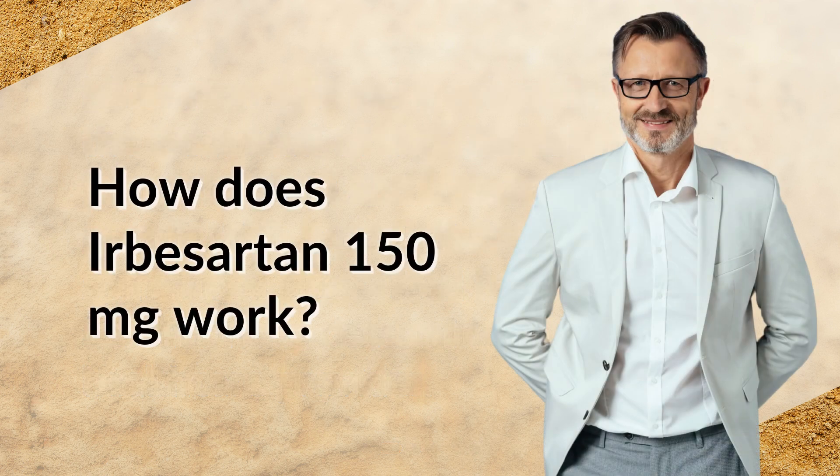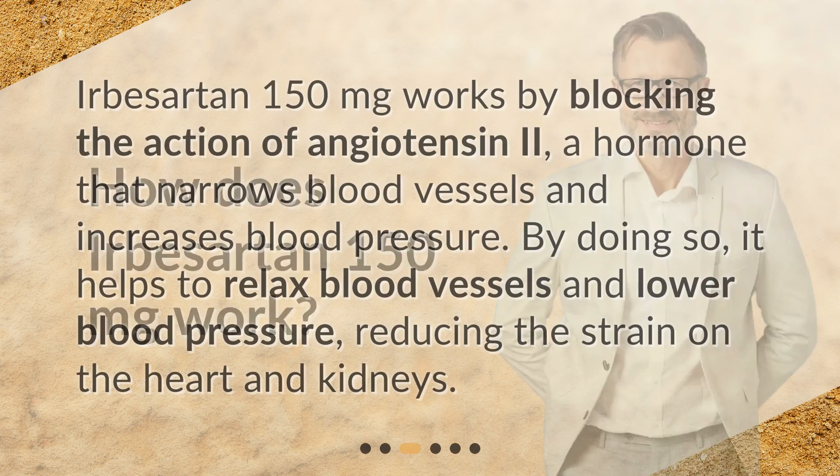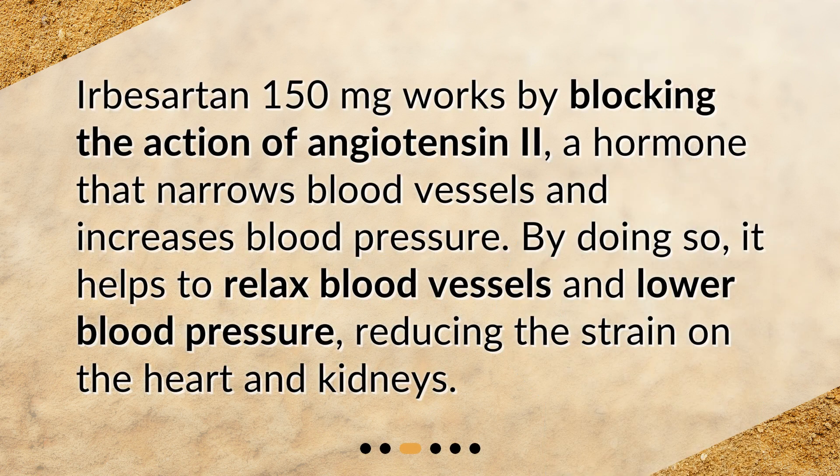How does Irbesartan 150 mg work? Irbesartan 150 mg works by blocking the action of angiotensin 2, a hormone that narrows blood vessels and increases blood pressure. By doing so, it helps to relax blood vessels and lower blood pressure, reducing the strain on the heart and kidneys.